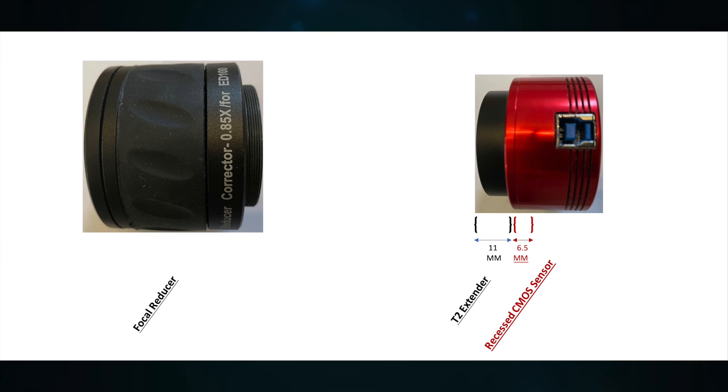So next in my image train heading towards the focal reducer, I have this T2 extender. It has a measurement of 11 millimeters. So totaled together so far, I have 17.5 millimeters.